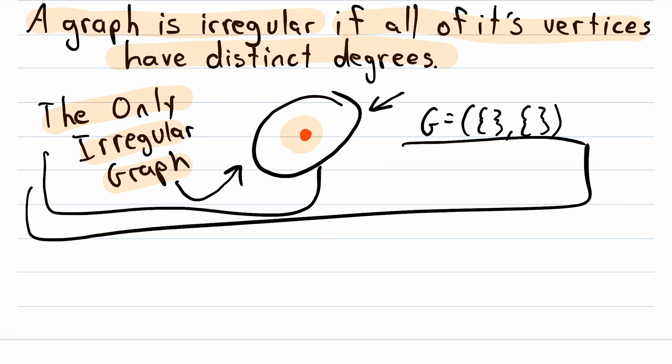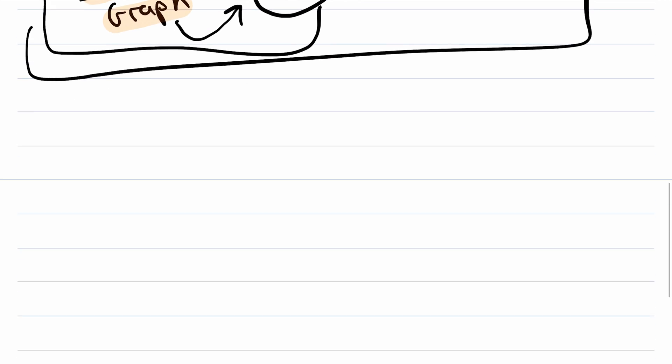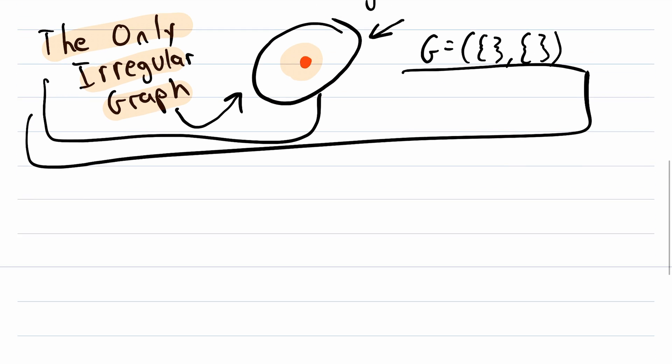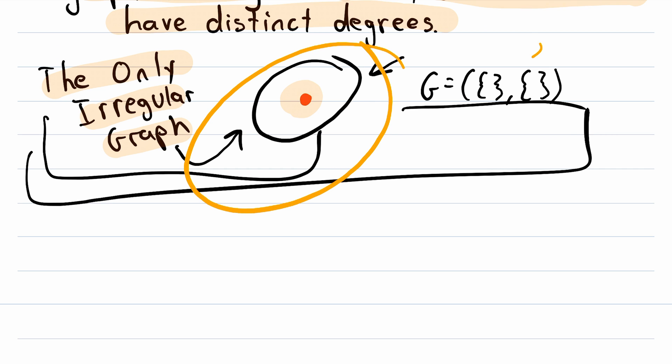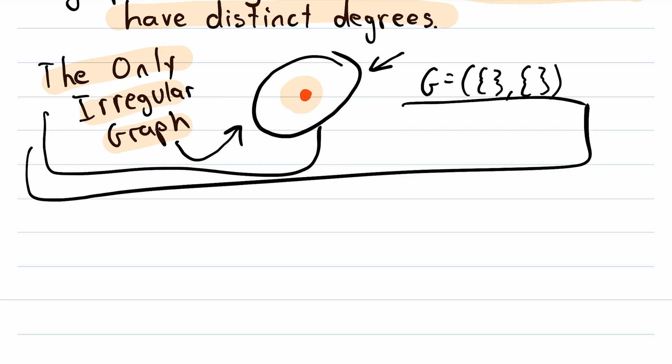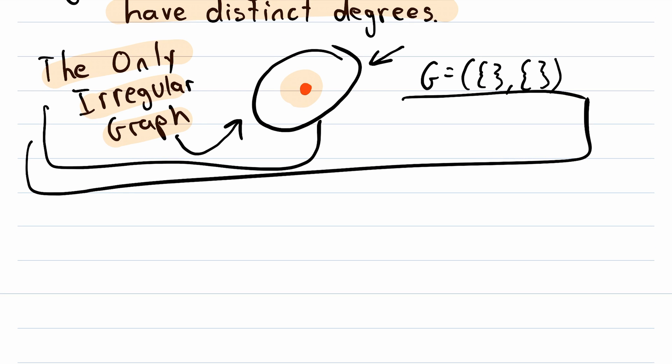So then the natural question to ask is how do we know that this here is the only irregular graph? How can we be sure that no others exist? Well, let's find out, and if you're familiar with proofs, what we're going to do here is basically a proof by contradiction. We're going to suppose that there exists an irregular graph other than these two that we just talked about. If that's the case, then this irregular graph must have at least two vertices, because if it has only one vertex, then it has to be this graph, and if it has zero vertices, then it has to be this graph. So it's got at least two vertices.